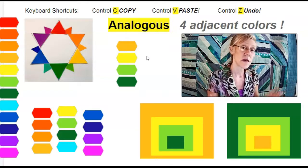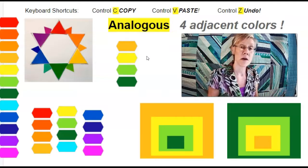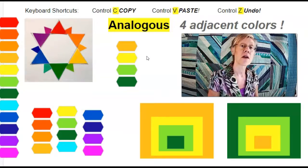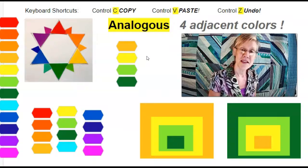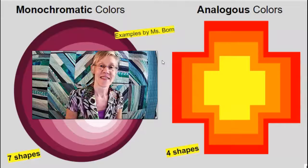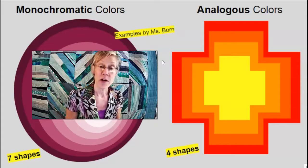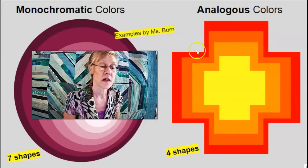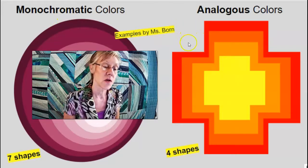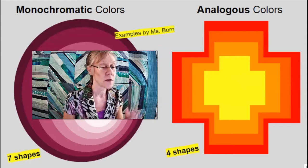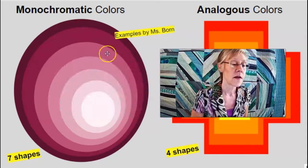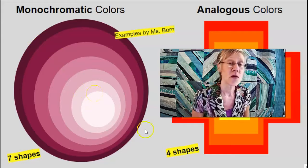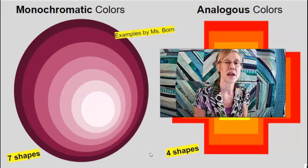You are the designer now. It's a matter of opinion. Please choose a set of four analogous colors that you like the best. On this project page that you will hand in to me through Google Classroom, you can see the analogous picture has four shapes for four colors. The monochromatic picture has seven shapes. You'll create it on the working page.